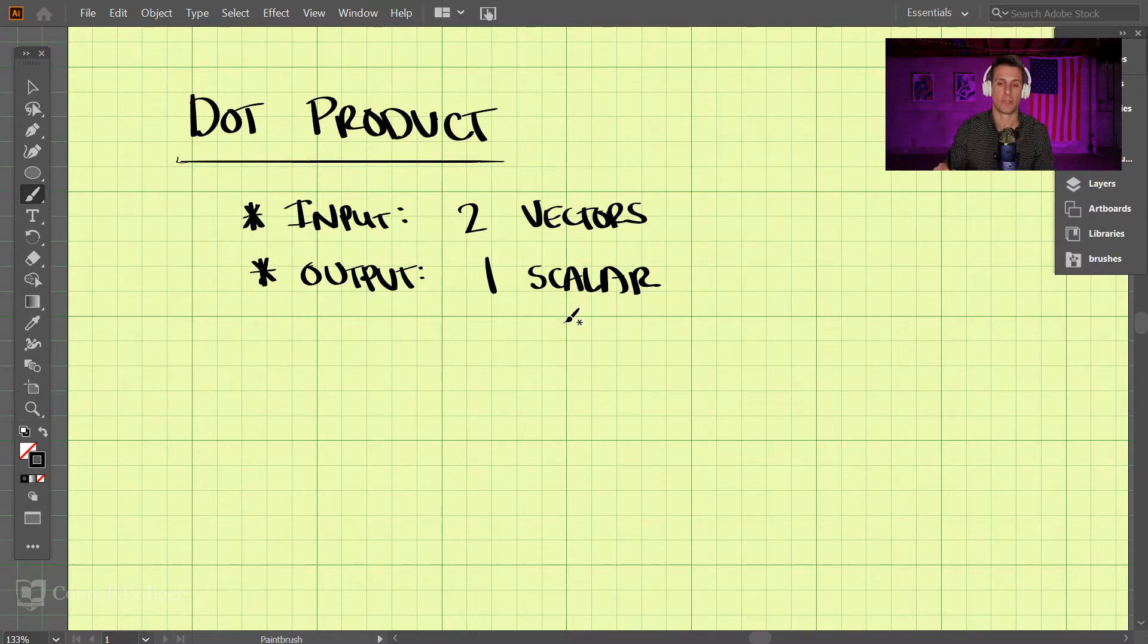Graphically, if we have two vectors A and B, and we know the magnitude of each of these vectors and the angle between them, we can write the dot product.